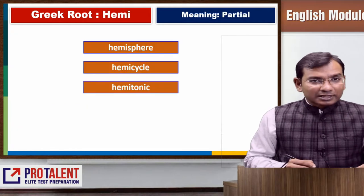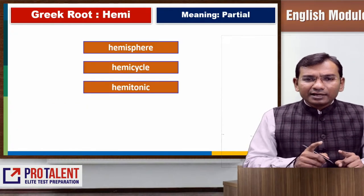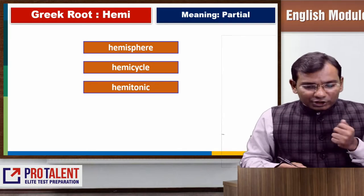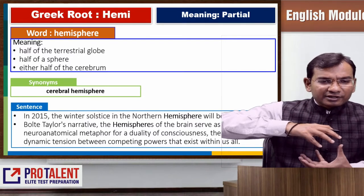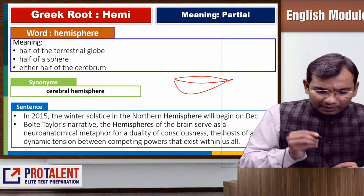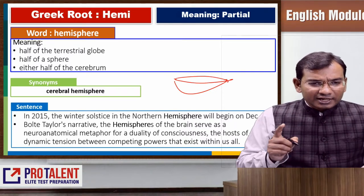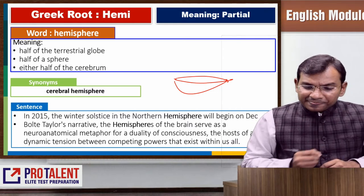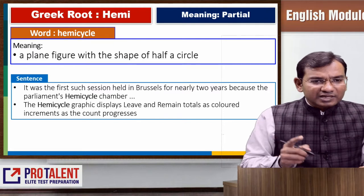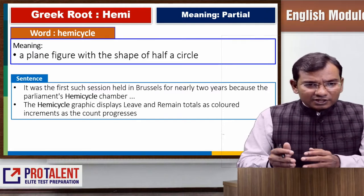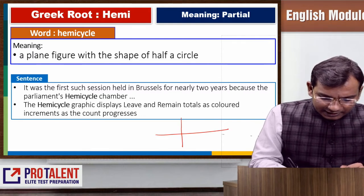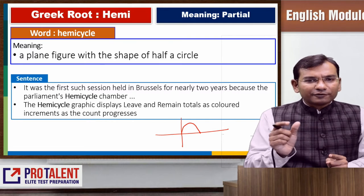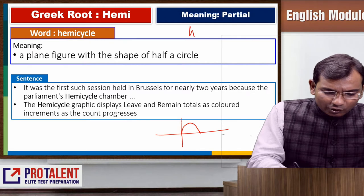The next root is HEMI, meaning partial or semi. A hemisphere is half a sphere — half of the globe. The cerebral hemisphere refers to half of the brain. A hemicycle is a plane figure with the shape of half a circle — a semi-circular arrangement or movement.